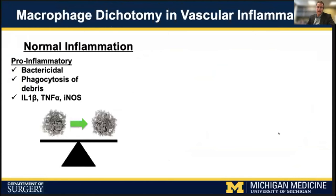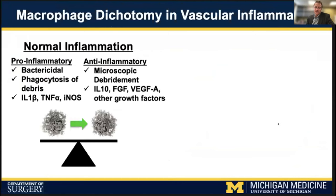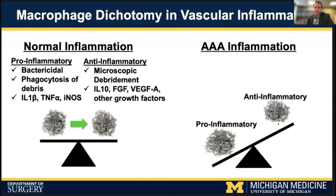Macrophages are a highly plastic cell capable of adapting a range of phenotypes depending upon their cellular population and phenotypic expression. With normal macrophage inflammation in vascular disease, they initially present in a pro-inflammatory state characterized by phagocytosis of debris and release of inflammatory cytokines, and then should transition to an anti-inflammatory state characterized by the release of anti-inflammatory cytokines and growth factors. However, with abdominal aneurysms, this transition fails to occur. Instead, macrophages persist in a chronic inflammatory state for which the mechanism remains undefined. The goal of our laboratory is to better elucidate the mechanisms behind how macrophages remain in this state of chronic inflammation.